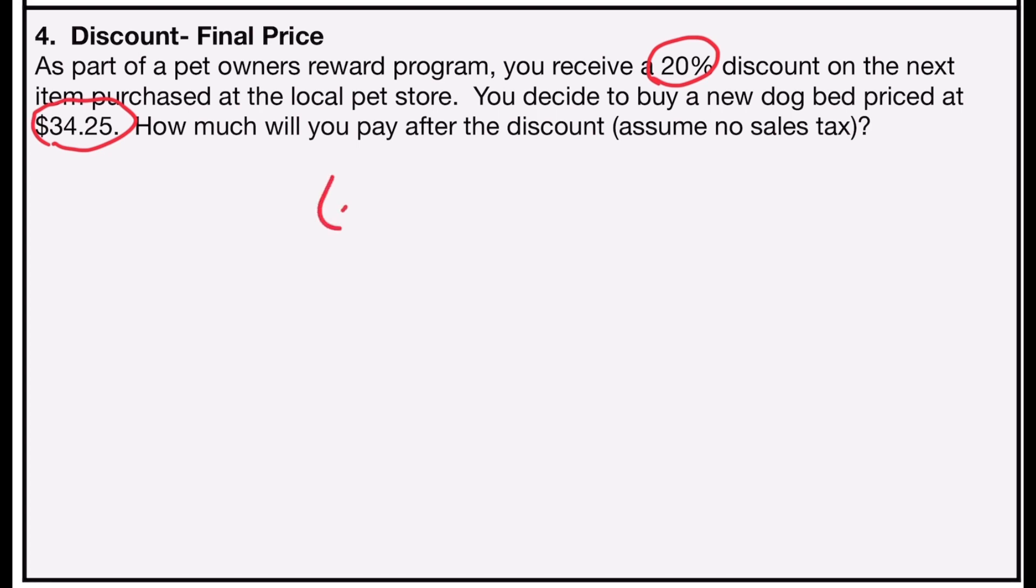So like the other problems, I'm going to multiply 20% in its decimal form, 0.20, times the price, which is $34.25. When I punch that into a calculator, I find out that that's going to be $6.85. So that will be my discount. So I'm going to take the $34.25, and I'm going to subtract out the $6.85 that I will save for my discount, and find out that the dog bed will cost me $27.40.